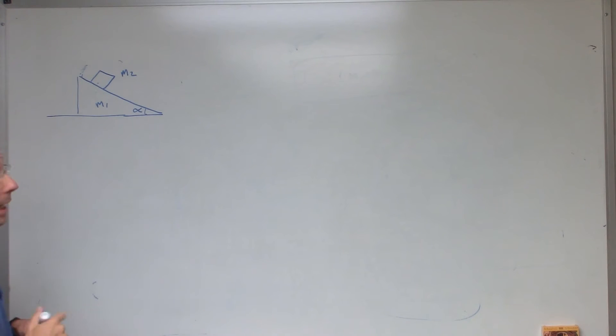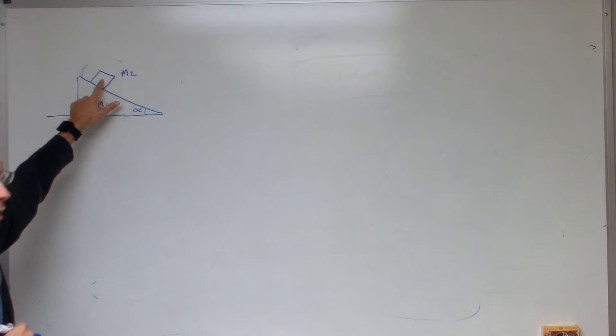Okay, here is the next Lagrangian example. In this case, I have a block of mass 2 on a ramp of mass 1, and there's no friction between these two,